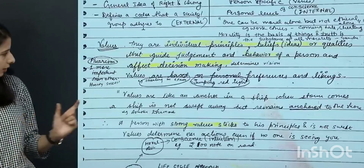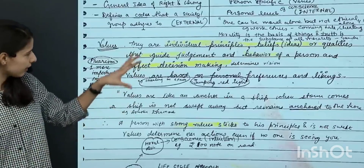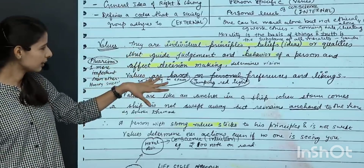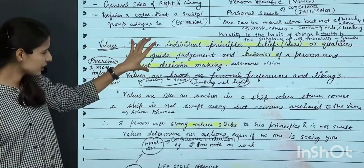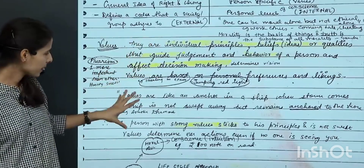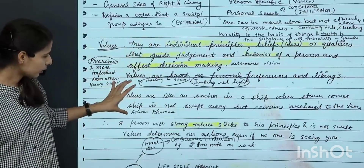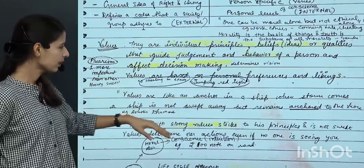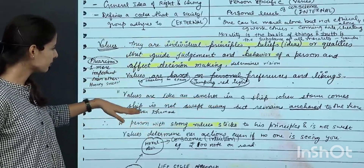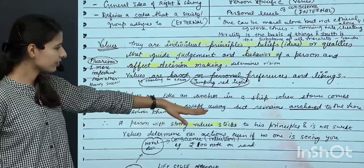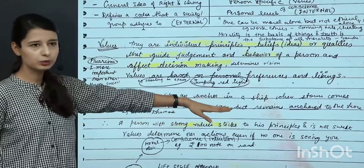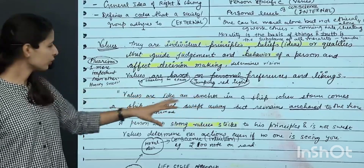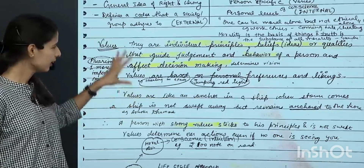Next, I have written about values — how can you define values? I made a small definition. I wrote a quotation: 'Values are like an anchor in a ship — when a storm comes, the ship is not swept away but remains anchored to the shore.' For any values question, there will be no question — I will begin my intro with that.